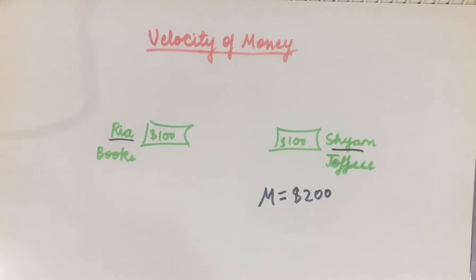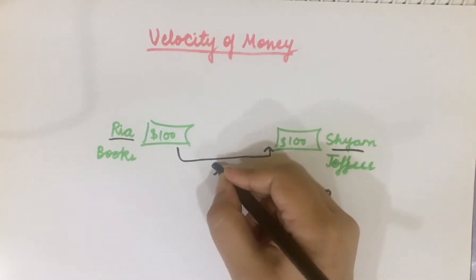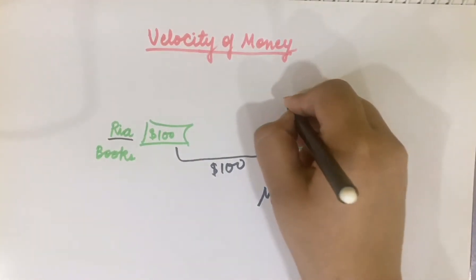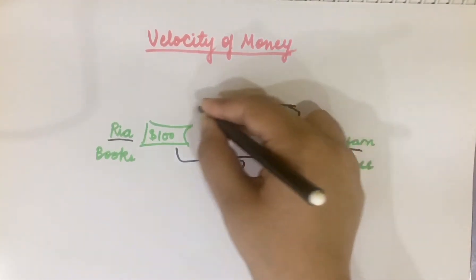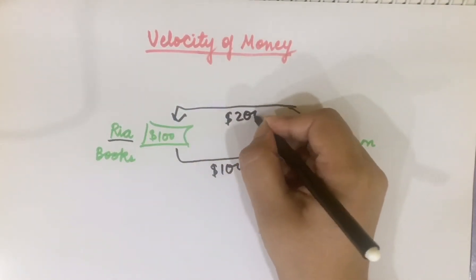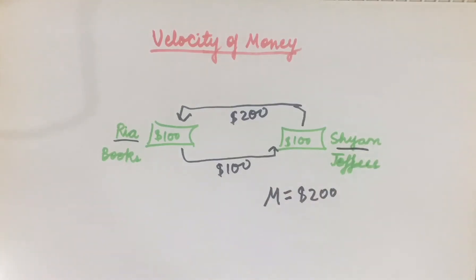Now, Ria buys toffees for $100 from Shyam. And Shyam buys books from Ria for $200. So Shyam's spending is $200. Because when Ria sold toffees, the money in circulation increased.